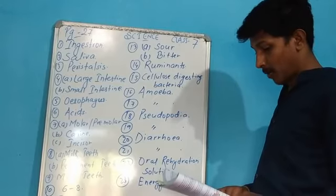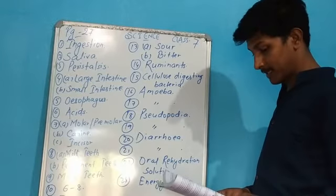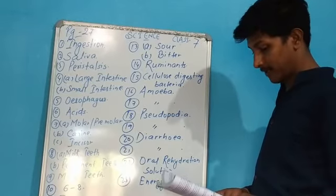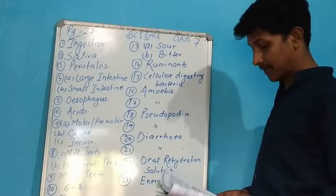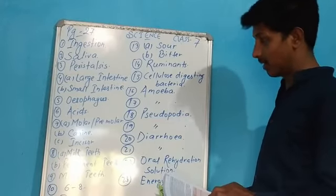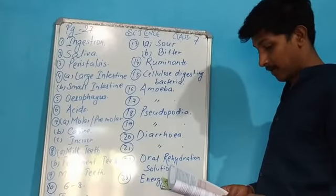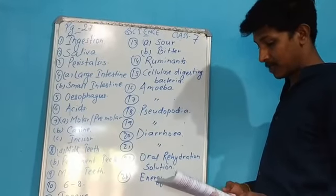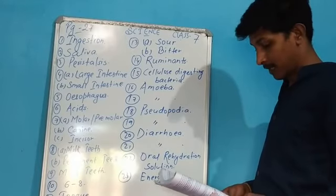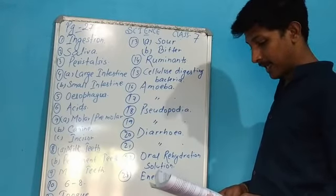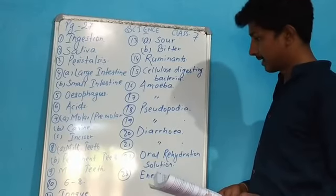Number five: what is the other name of the food pipe? That is oesophagus. Number six: the bacteria present on unclean teeth convert the sugar-linked food into a substance, and this substance is acid. Number seven A: name the type of teeth which are for chewing and grinding food — molar or premolar. Number B: for piercing — canines; and for biting and cutting food — incisor.